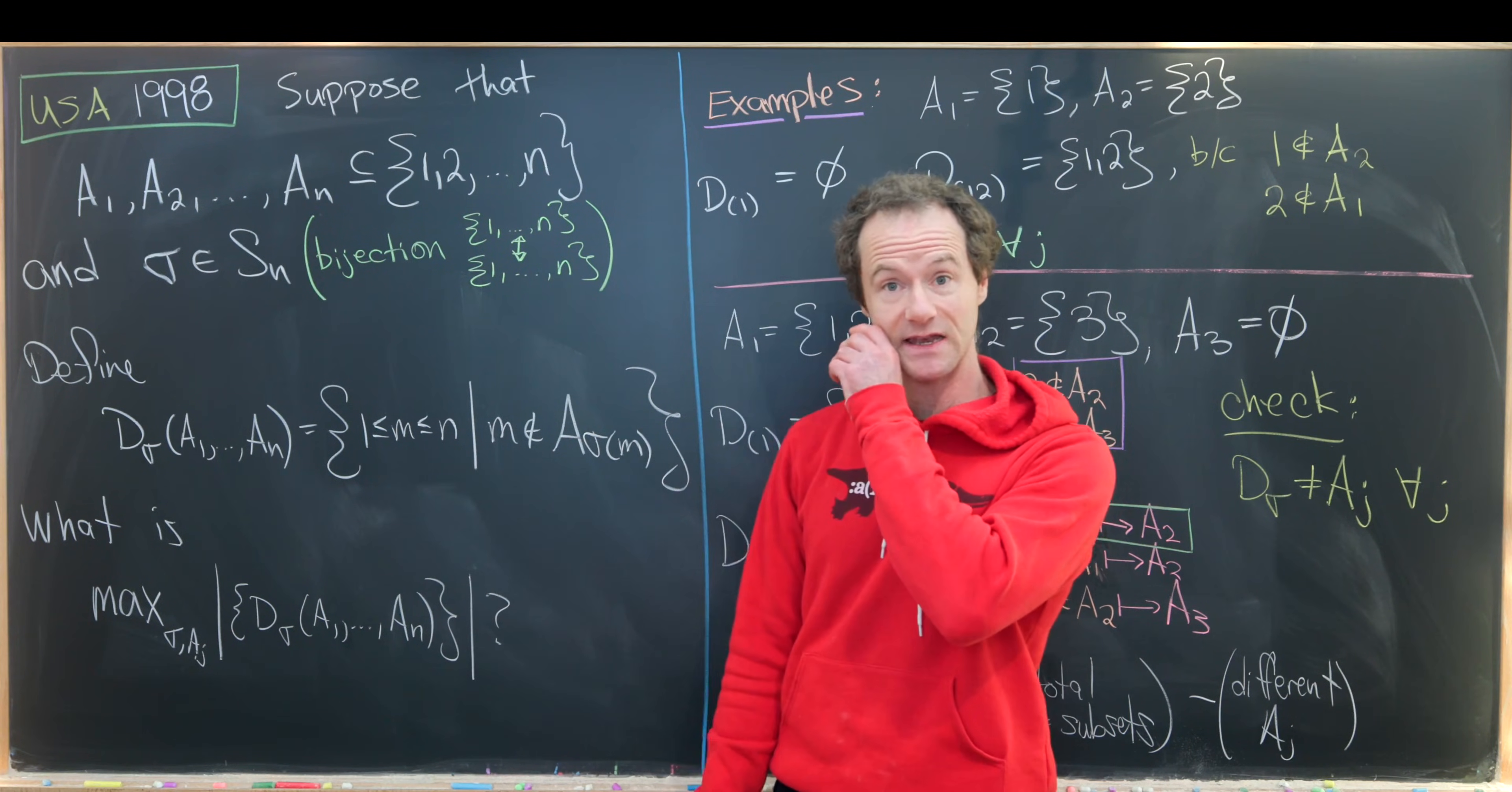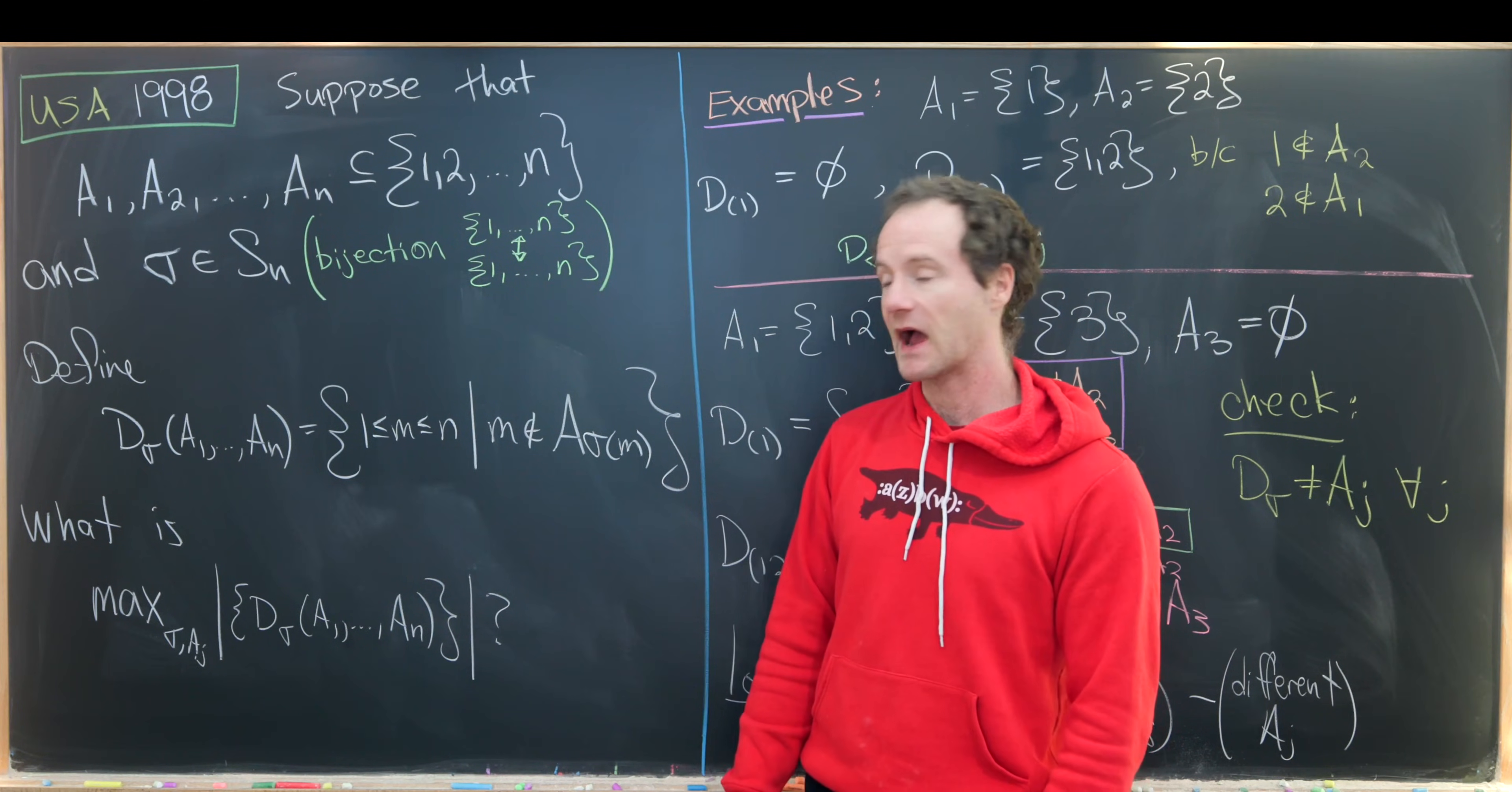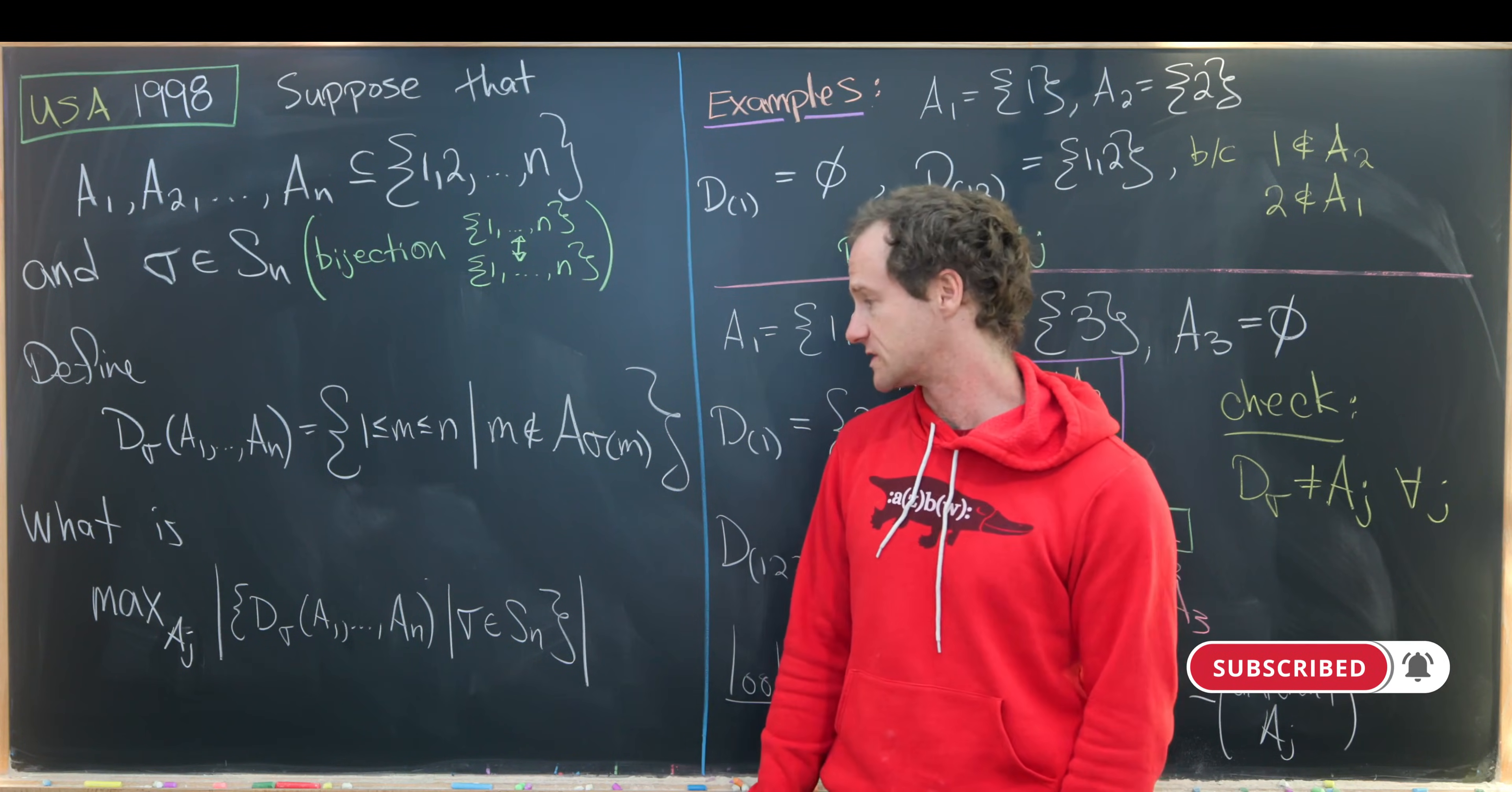Next, we'll define the following set which is built out of these subsets as well as this bijection. So it's denoted by D_σ(A1 through An) and it's going to be all numbers between 1 and n so that m is not an element of A_σ(m). So that's a bit to unpack. And we'll unpack it with some examples. But before we do that, let's look at the goal. The goal is to find the maximum number of sets of this form as you work over all possible different collections of subsets of 1 through n. And that's of course as sigma is running through all of the elements of the symmetric group. In other words, all bijections.